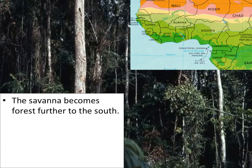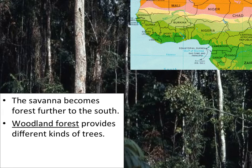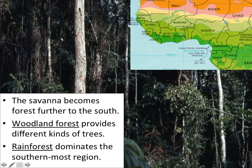Finally, we have forests, and there are two types you should know about — this is where a lot of people live. One type is the woodland forest, which has many different kinds of trees, shown here in the lighter shade of green on the map. The other area is the rainforest, shown in the really dark area, which has the thickest and most luscious vegetation. It dominates the southernmost region of West Africa.